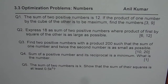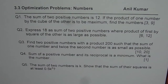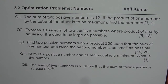Question number 1: the sum of 2 positive numbers is 12. If the product of one number by the cube of the other is to be maximum, find the numbers. The answers are 3 and 9. These are your practice questions to get started.